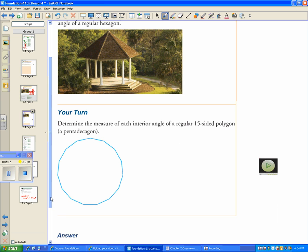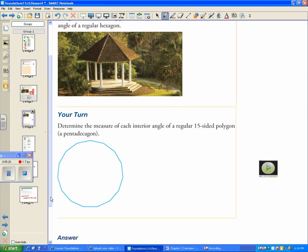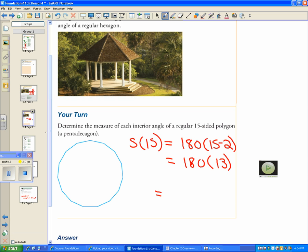Let's do this one together. Determine the measure of each interior angle of a regular 15-sided polygon, a pentadecagon. So we're going to go S(15) is equal to 180(15-2), 180 times 13, getting out your calculator, is equal to... 180 times 13, hopefully you're doing this with me, 2,340.